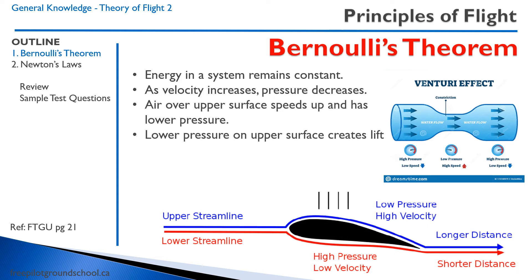Air over an upper surface speeds up and has a lower pressure because of the camber and the greater distance. And lower pressure on the top surface creates lift because there is less pressure on the top than there is at the bottom.